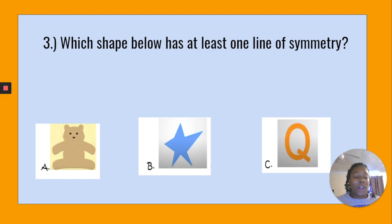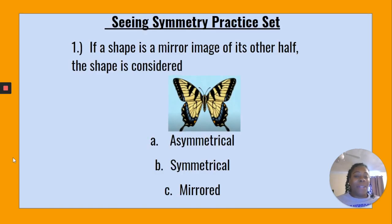Now that you have written all of your answers, it's time to reveal the correct answers. So here we go! Number one: If a shape is a mirror image of its other half, the shape is considered symmetrical. Good job!